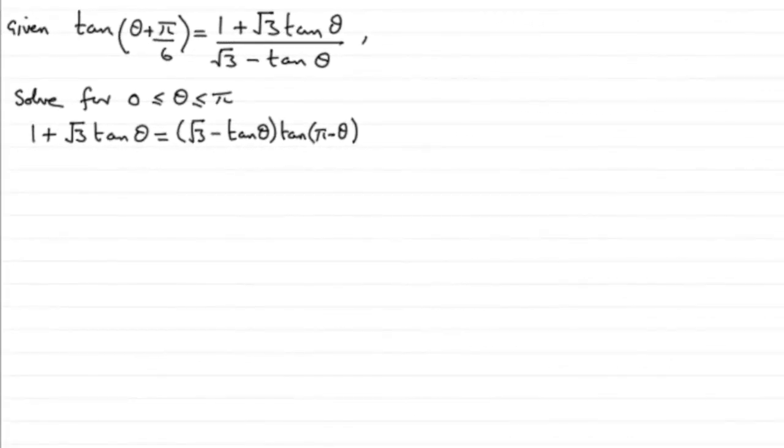Now, in this part of the question, we were given from the previous part that tan of theta plus pi upon 6 equaled 1 plus root 3 tan theta all divided by root 3 minus tan theta.